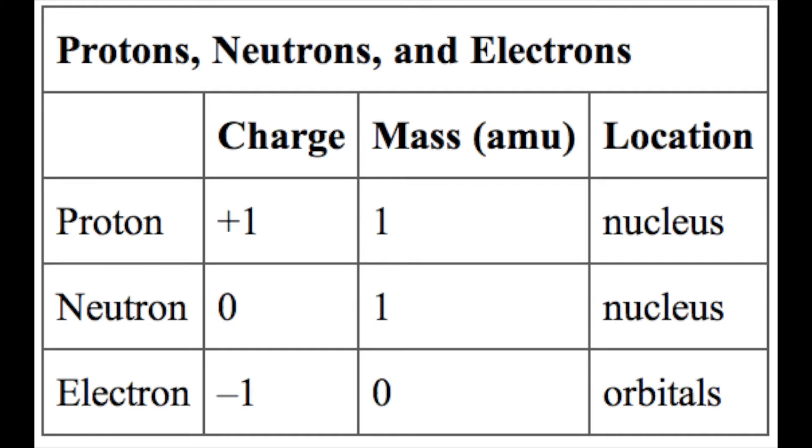In an uncharged neutral atom, the number of electrons orbiting the nucleus is equal to the number of protons inside the nucleus. In these atoms, the positive and negative charges cancel each other out, leading to an atom with no net charge.